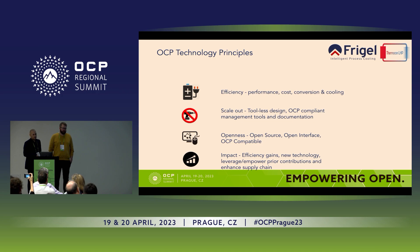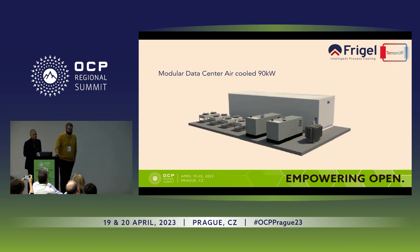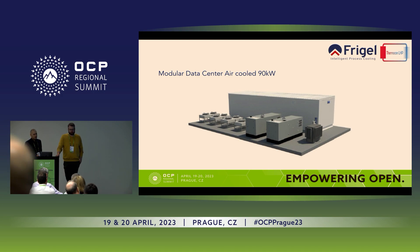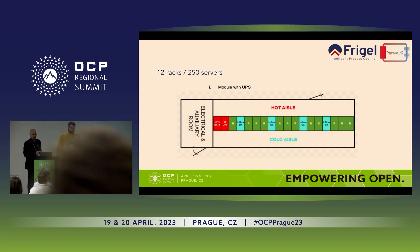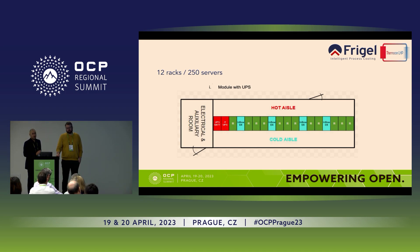The principles are: toolless, efficient. Now we want to show what we have already in OCP. An example is a 90-kilowatt modular data center, which is air-cooled. The bottleneck is the air coolers, which are limited to 90 kilowatts. For that reason, the 12 racks are half empty — each one has 7 in use instead of 14. But we can place 250 servers.